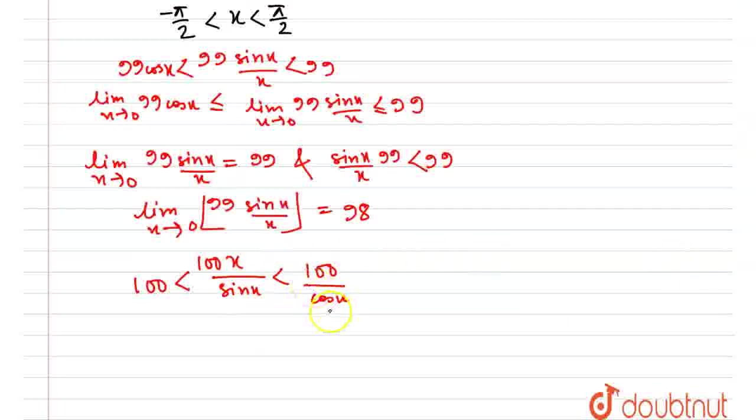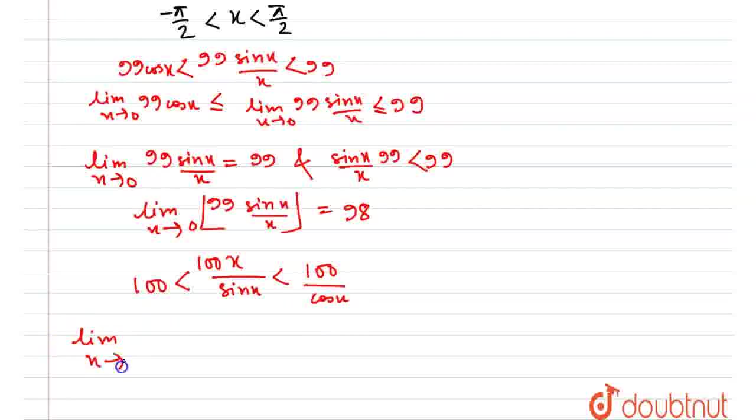Same following the same procedure, because cos x, limit x goes to 0 cos x is 1 so from here limit x goes to 0 of box 100 x by sin x that is equal to because it approaches 100 from above this time it would be 100 and final answer would be 100 plus 98 that is 198 would be the final answer.